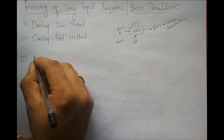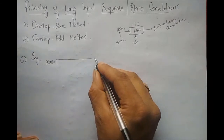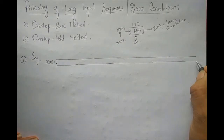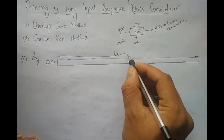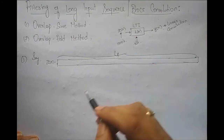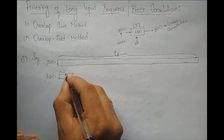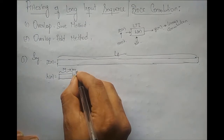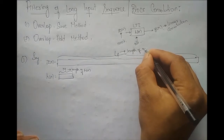Say x of n is the input sequence, and we will assume that it is a very lengthy sequence. Its total length is Ls, in terms of thousands. And h of n, the length of the impulse response, is very short — we will call it capital M, where capital M is the length of the impulse response h of n. Ls is the length of the input signal x of n.